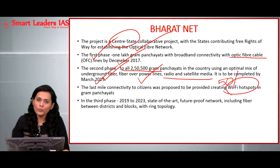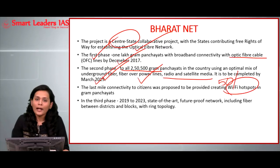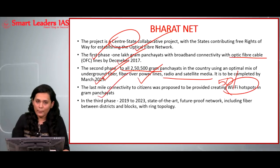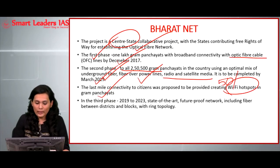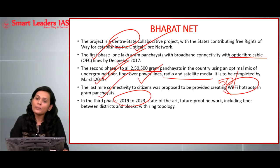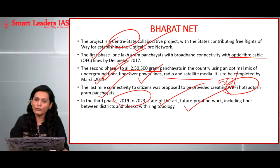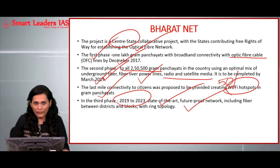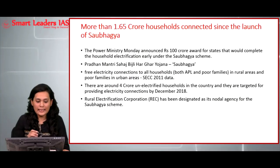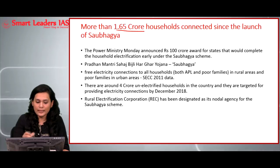The third phase of the program, running from 2019 to 2023, will provide state-of-the-art facilities to create a future-proof network by also addressing issues of privacy. The next news item is about more than 1.65 crore households being connected since the launch of the Saubhagya scheme.